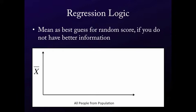Or another way of thinking about it is if you made a guess for everyone, there's no other value that you could pick that's going to minimize the amount of error that you're going to make in your guesses. So clearly, the mean is going to be your best guess for any random score if you don't have any better information to go on. You should just guess the mean.